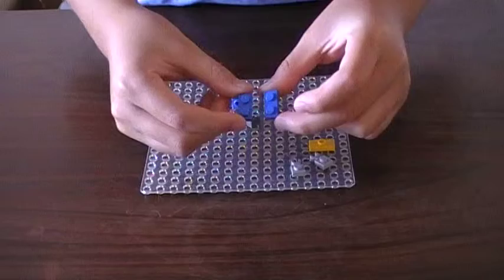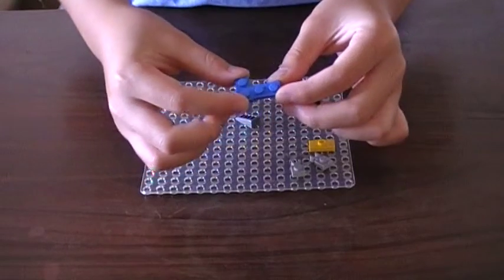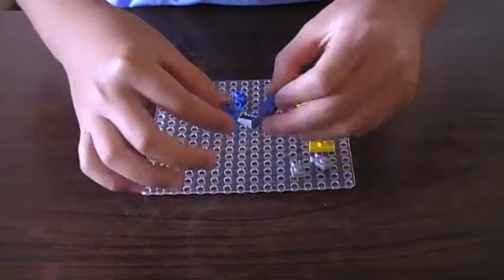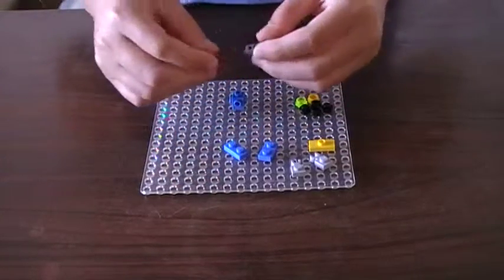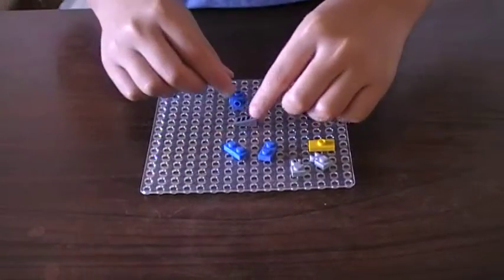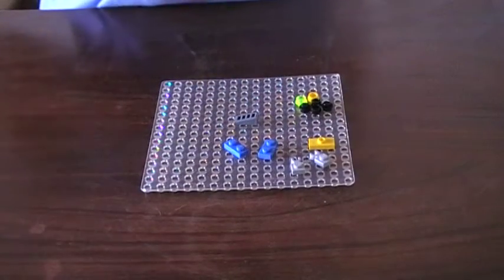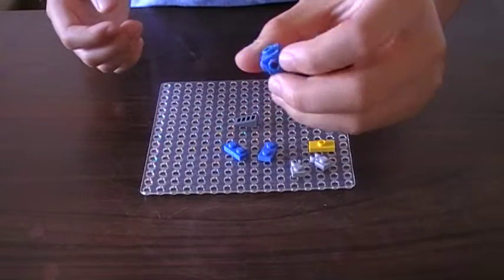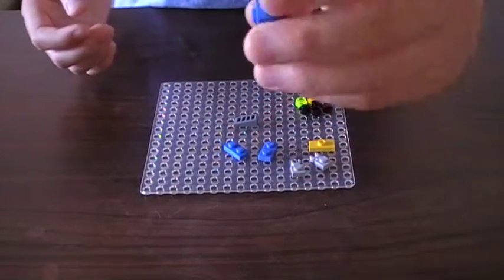We'll need two of these two by one pieces with two studs on top each. We'll need an air vent, one of them. And you'll need a one by one piece with four sides, one stud on each, like that.